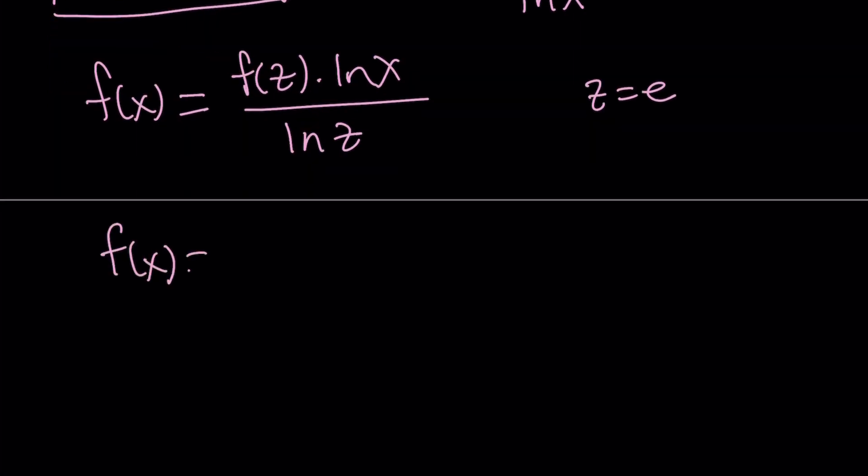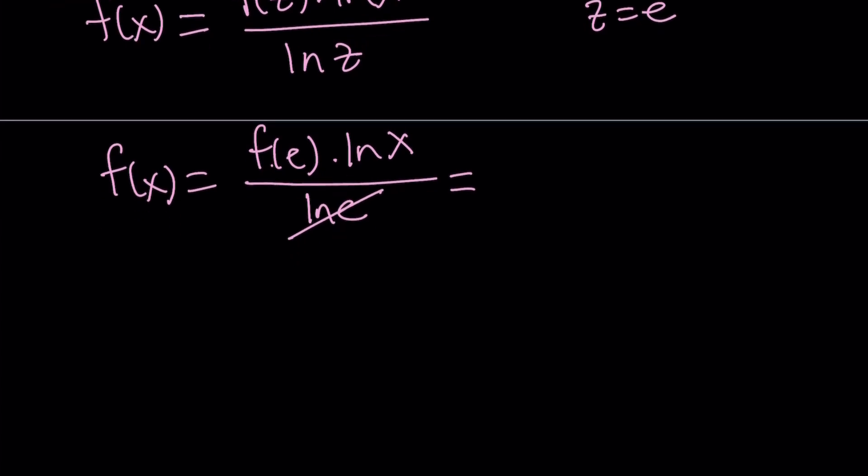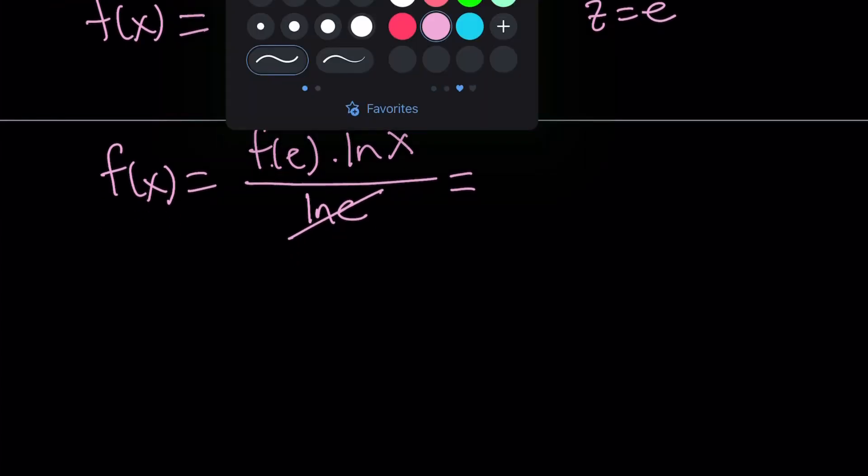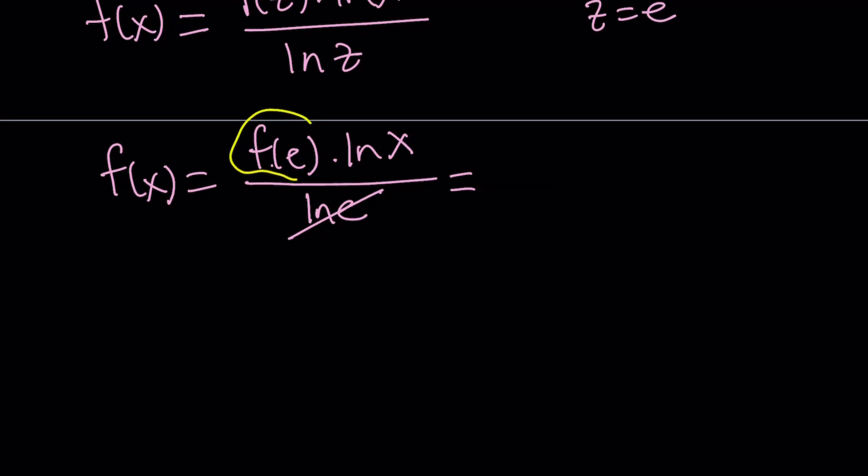We get f of e multiplied by ln x, which is dependent on x, divided by ln x, which is 1. We get f of e times ln x. Now, f of e is a constant, so I can call that k.